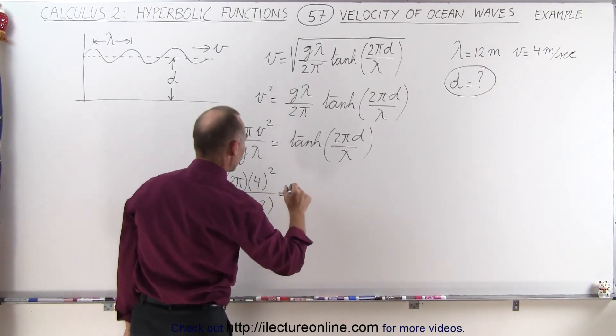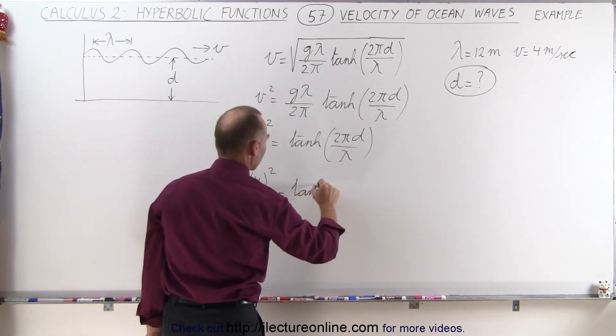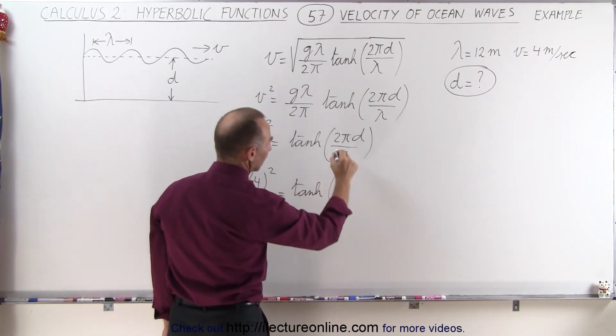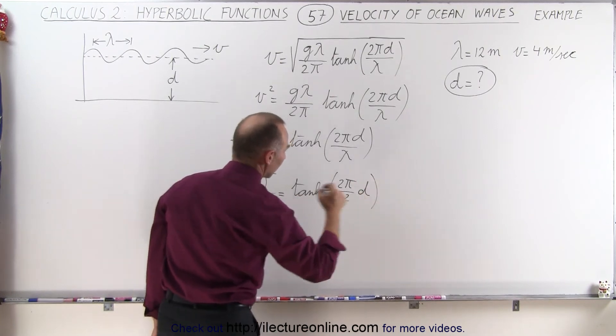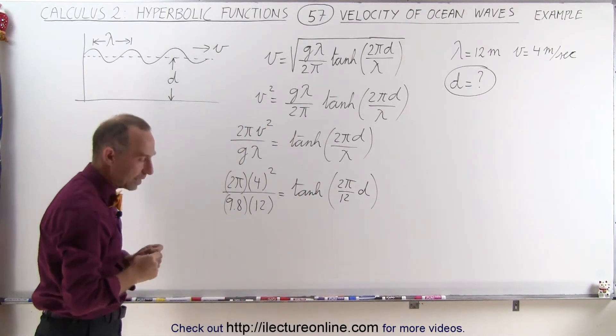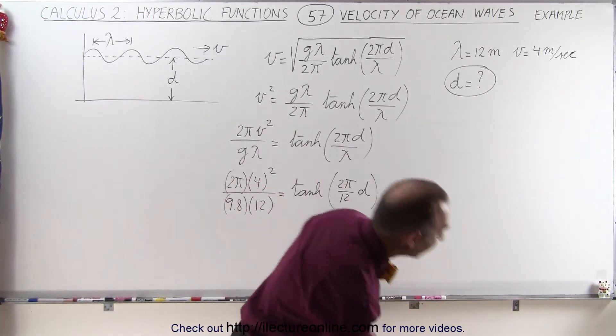All right, and that would be equal to the hyperbolic tangent of, and here we get 2π divided by 12 times d, of course d being the unknown quantity here. So let's see what that is equal to.